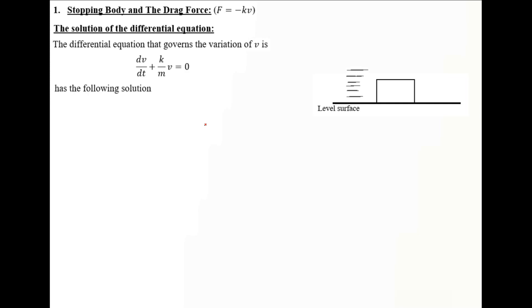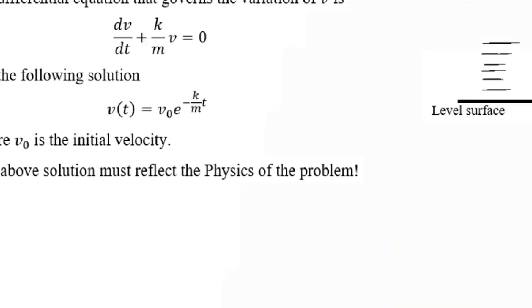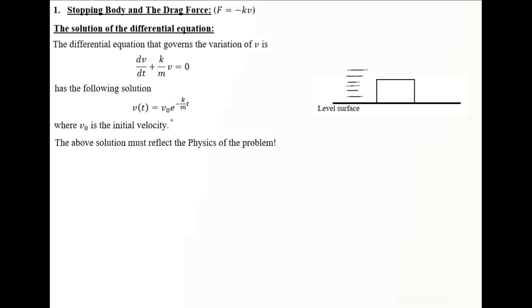Now, the solution of the differential equation. The differential equation governing V has the solution V equals V0 times e to the power of minus K over M times T, which is an exponentially decaying function, where V0 is the initial velocity, M is the mass, and K is the drag coefficient. We need to verify this solution reflects the physics of the problem by testing limiting values.